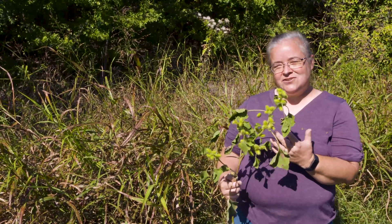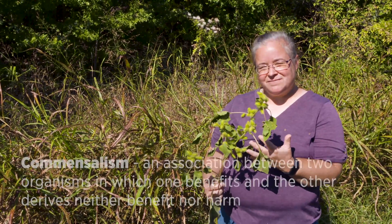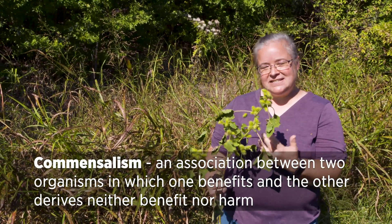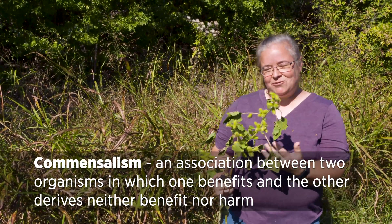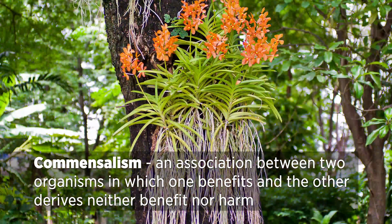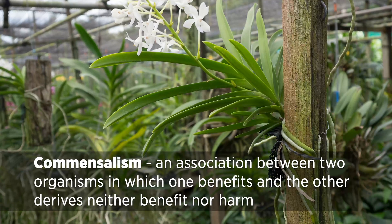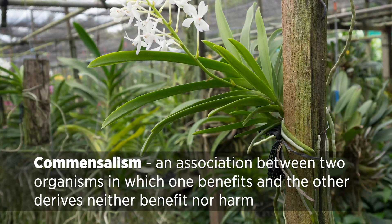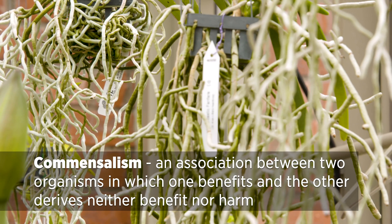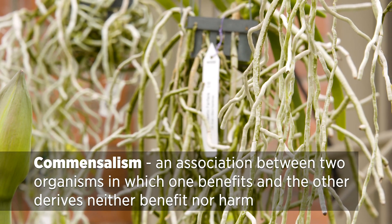An example of a relationship that's pretty much neutral is commensalism. That means one species is benefiting, but the other species is not being helped or harmed in any way. An example of commensalism: when orchids grow on trees, they're not actually tapping into the tree for any nutrients or water — they're just using it as support. The host tree doesn't get affected one way or the other, but the orchid gets a place to live.